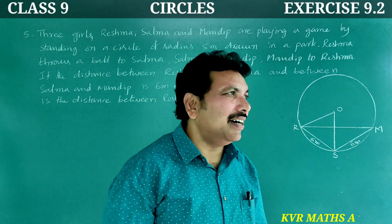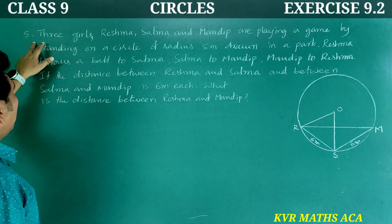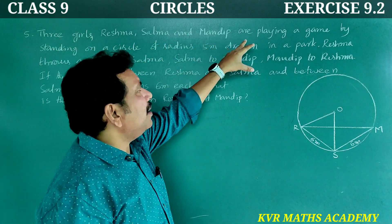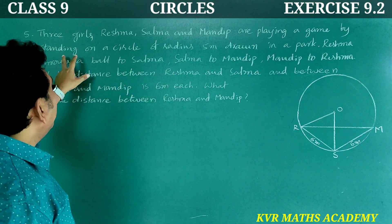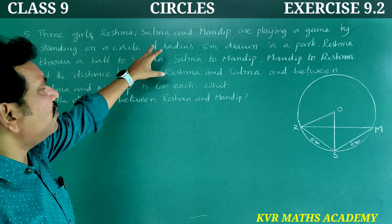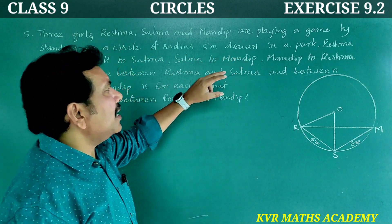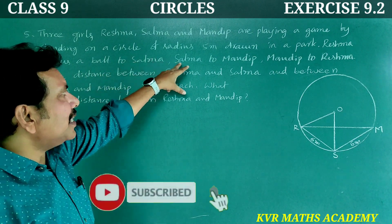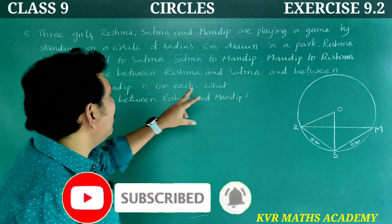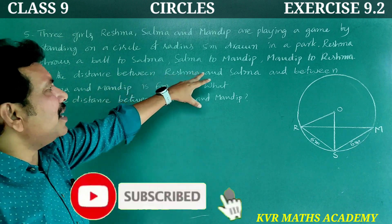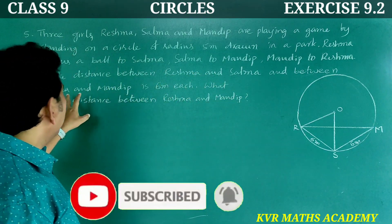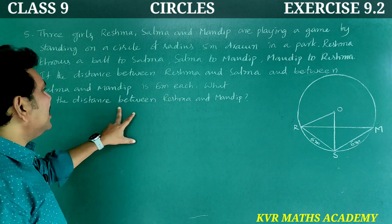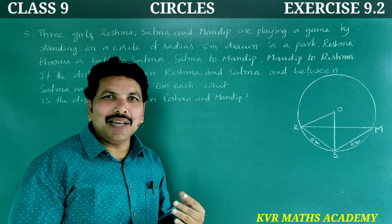Yes, let's go through this. This is the fifth question. Three girls — Reshma, Salma, and Mandip — are playing a game by standing on a circle of radius 5 meters drawn in a park. Reshma throws a ball to Salma, Salma to Mandip, Mandip to Reshma. If the distance between Reshma and Salma, and between Salma and Mandip, is 6 meters each, what is the distance between Reshma and Mandip?